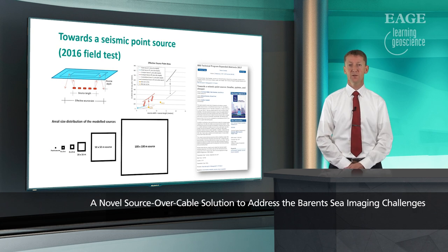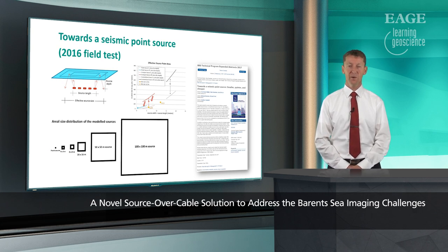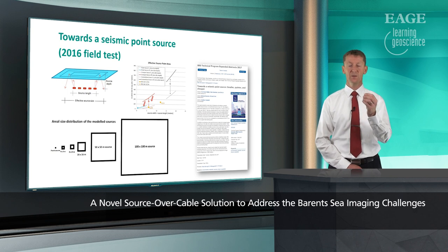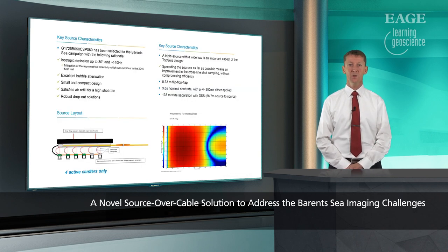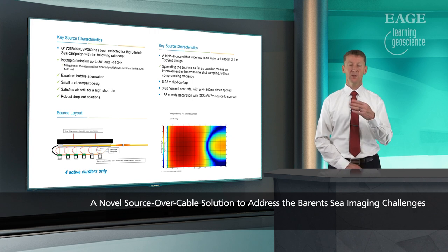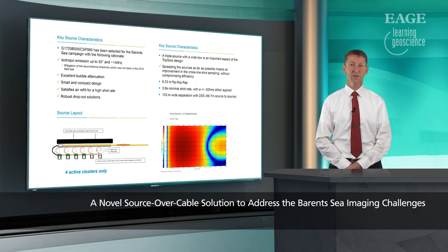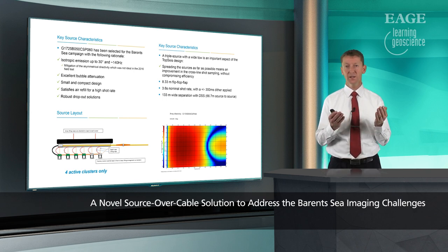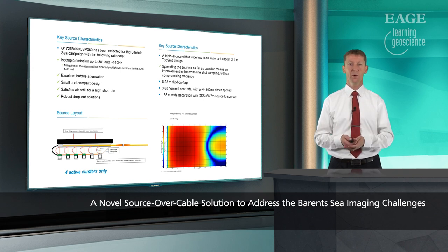We modified the source using fewer guns and less than half the source volume, but managed to get a very nice point source. We also used three sources with very wide separation to increase the efficiency of the acquisition. Here I'm showing a conventional shot gather where the sources are in front and the cables are behind, with normally 200 meters distance between the source and the front of the cables.